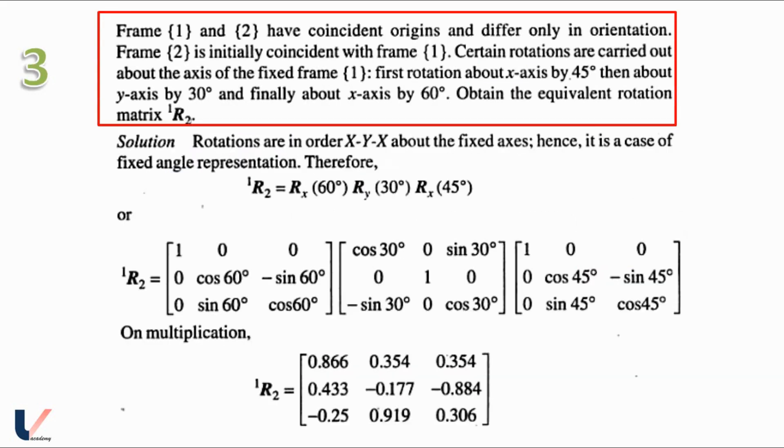Okay, moving on to the next problem. We have frame 1 and 2 having coincident origins and they differ only in the orientation. Frame 2 is initially coincident with frame 1. Certain rotations are carried out about the axes of frame 1, rotation 1, rotation 2 and rotation 3. We have to obtain the equivalent rotation matrix that is 1R2. This question is about successive rotations.